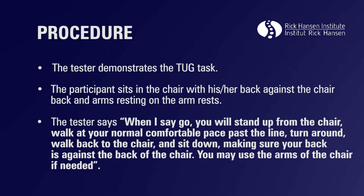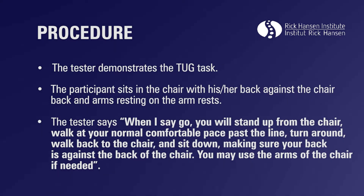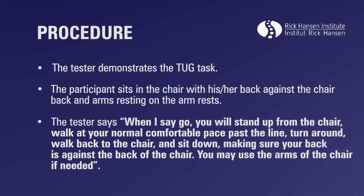The tester demonstrates the TUG task. The participant sits in the chair with his or her back against the chair back and arms resting on the armrests. The tester says: when I say go, you will stand up from the chair, walk at your normal comfortable pace past the line, turn around, walk back to the chair, and sit down, making sure your back is against the back of the chair.